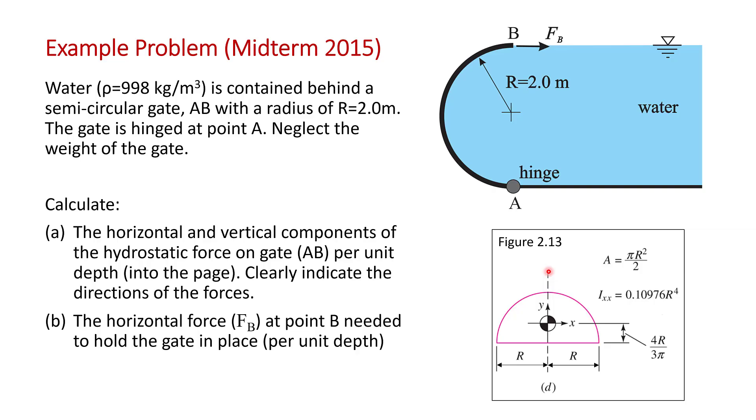This example is taken from the midterm 2015, so this is an actual midterm caliber problem. We're talking about water with density of 998 kilograms per cubic meter contained behind a semi-circular gate with radius two meters.